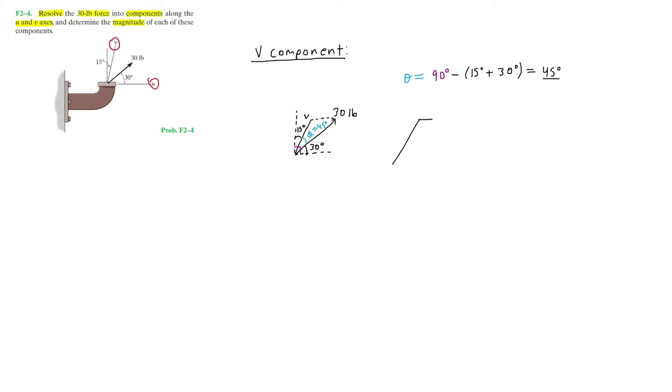Now we can go ahead and simply redraw this triangle. Remember that the magnitude of the force, which is 30 pounds, is equal to the length of that vector, so that's simply length 30. Then here the 45 degrees, and here in the V direction is the V component of the force FV.